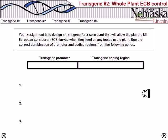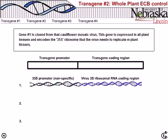Question two: we need to design a transgene for a corn plant that will allow the plant to kill European corn borer larvae when they feed on any kind of tissue in the plant. Again we have three genes to choose from.